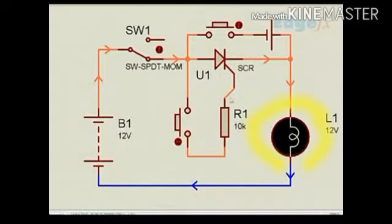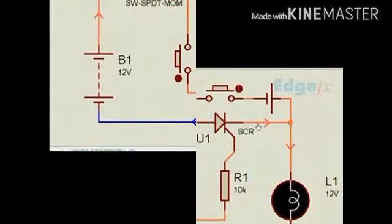There is no current flowing in the gate now because once I have triggered it, the SCR behaves like a diode and conducts continuously.